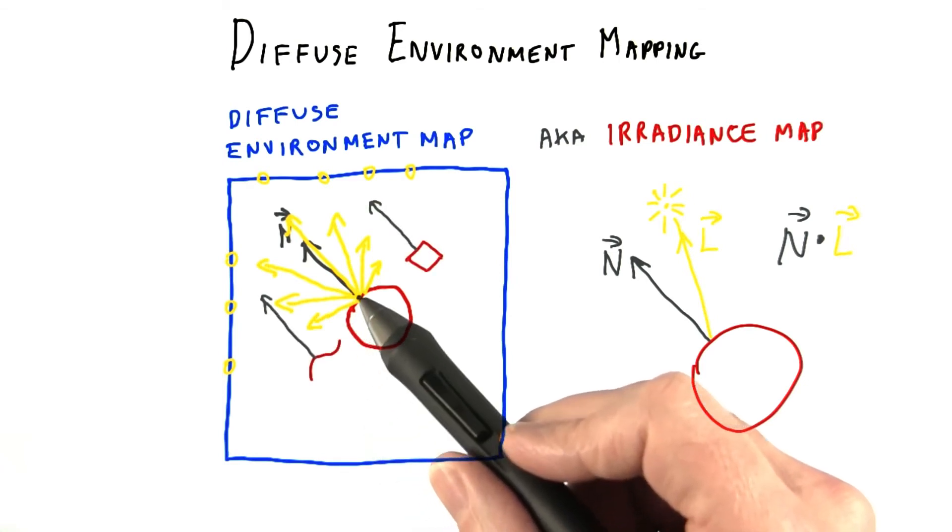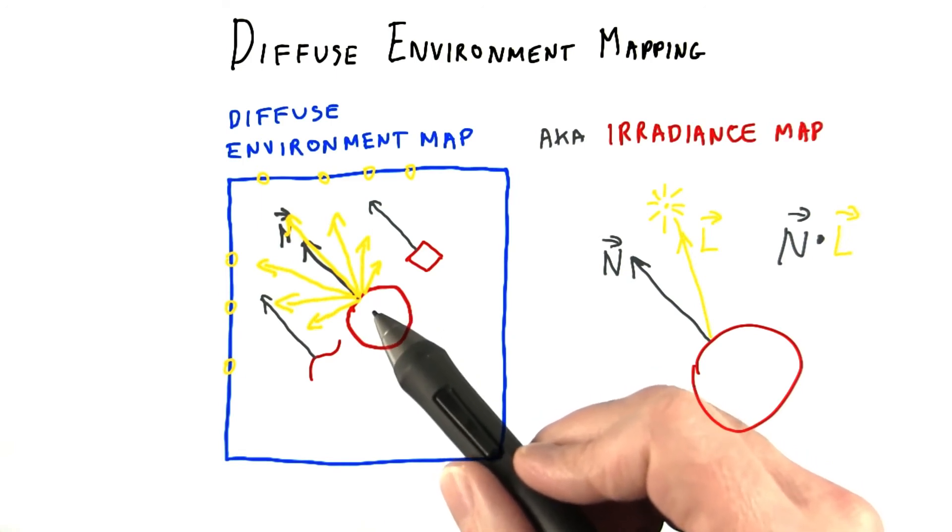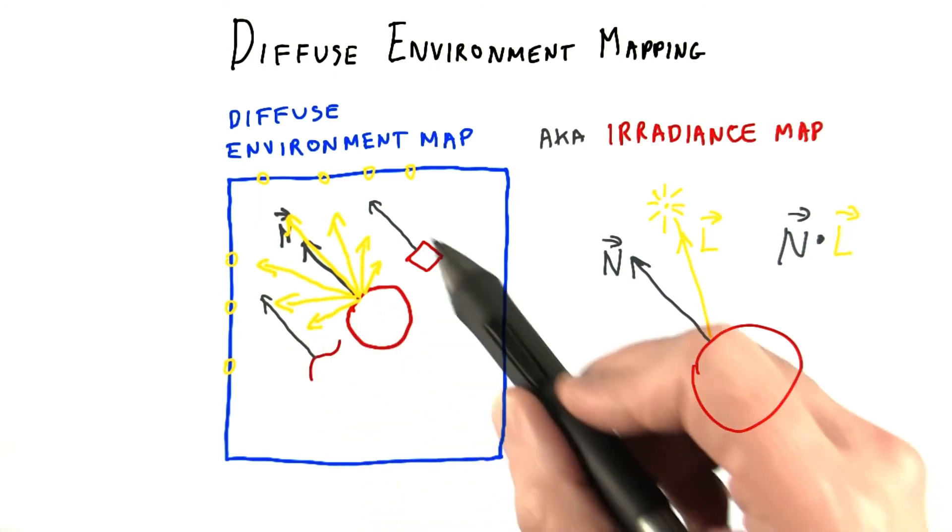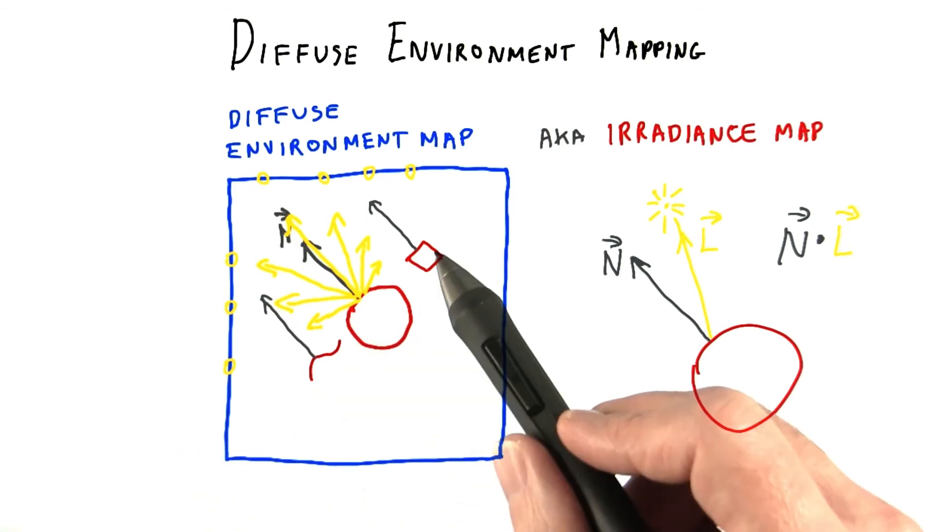First, once you've computed the sum of all contributions of all the texels for one point on one surface, you've actually computed it for all points with the same normal direction. Remember that the environment map is infinitely far away, so what's true for one surface normal is true for them all.